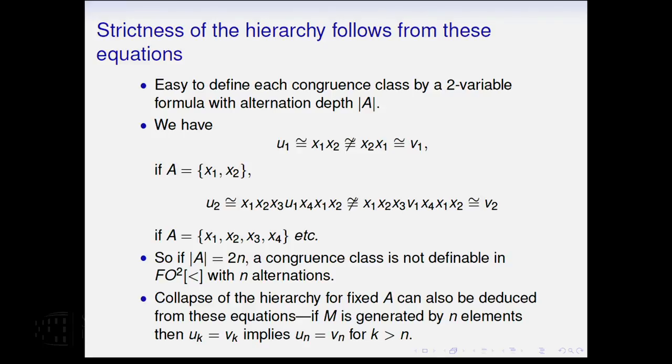And furthermore, if you look at the equations we have for characterizing alternation depth, since everything is idempotent in this monoid, all those omegas go away, and U1 and V1 then look like this, and you see these two words are not congruent over this two-letter alphabet, X1, X2, because here, X1 is the first letter to appear, and here, X2 is the first letter to appear. And as you go up the scale, you find that the words corresponding to U2 and V2 are not congruent over a four-letter alphabet and over a six-letter alphabet for U3 and V3.